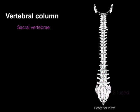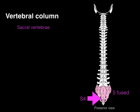The sacrum is composed of five fused vertebrae. Even though they're fused, we still see a segmental organization at levels S1 through S5. This is significant because spinal nerves still exit below their associated intervertebral foramina — the dorsal sacral foramina in this region.